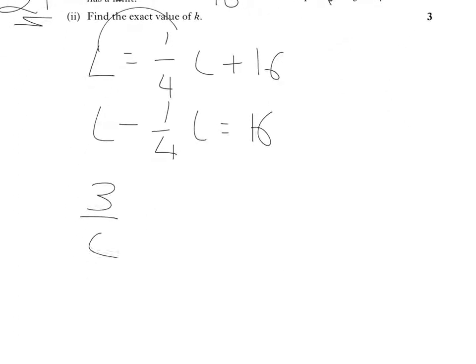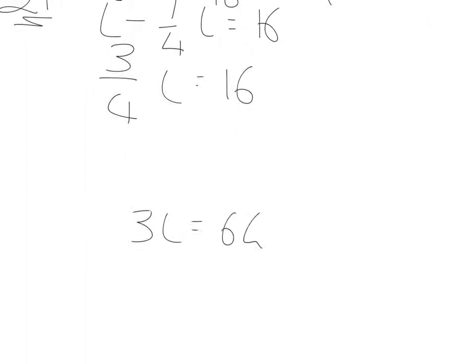So, it's 3 quarters of the limit is equal to 16. I'm going to multiply both sides by 4, and 3 lots of the limit is equal to 64. And then divide by 3, and the limit is equal to 64 over 3. That's the final answer.